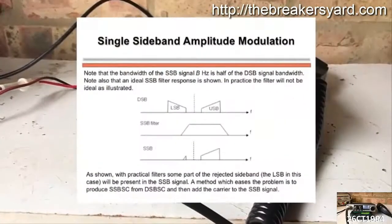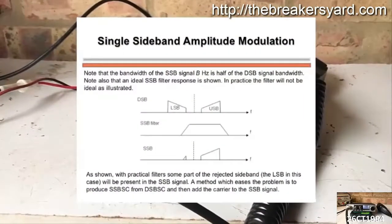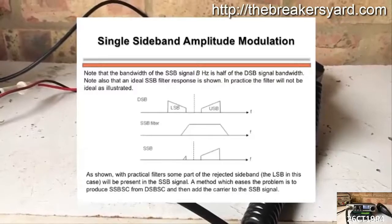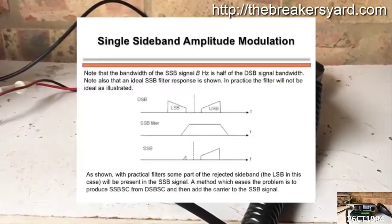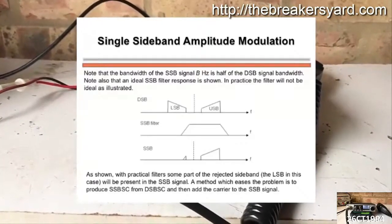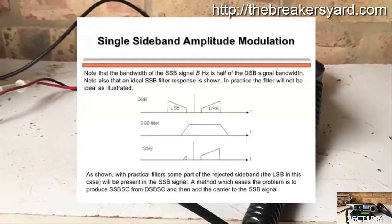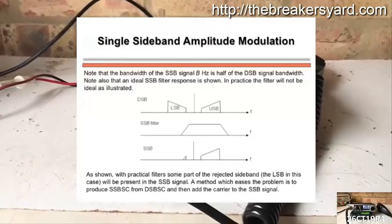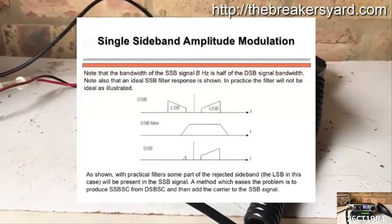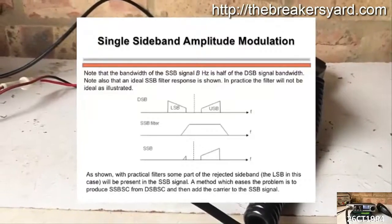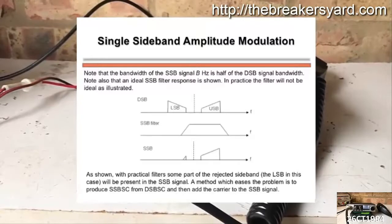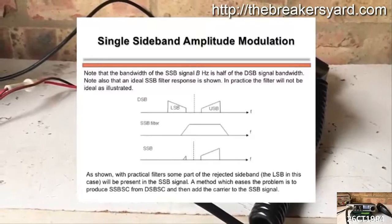In later advancements, it became feasible to filter out the carrier and either of the sidebands, giving us single sideband. Radio devices with the necessary circuits and filtering systems are able to receive transmissions that may be either lower sideband or upper sideband.